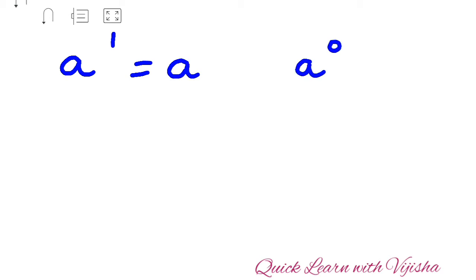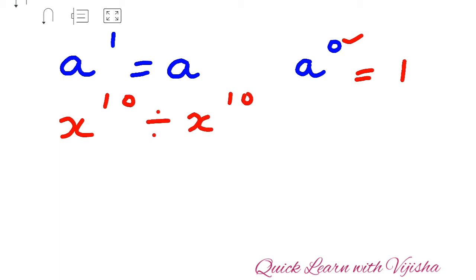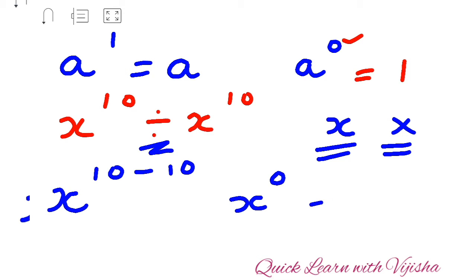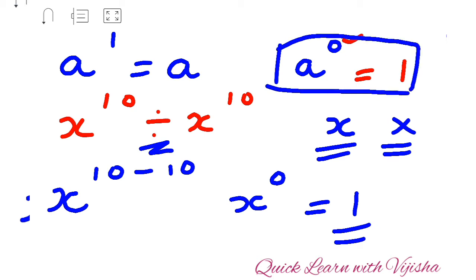Now let's see the third indices form. a raised to 1 equals a, and a raised to 0 equals 1 — if ever you get 0 as the index, the value is 1. For example: x raised to 10 divided by x raised to 10. The bases are the same, so we subtract: 10 minus 10 gives 0. Therefore x raised to 0 equals 1, as per this rule. Also remember to write x in cursive to avoid confusion with multiplication.